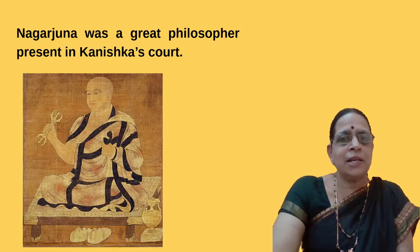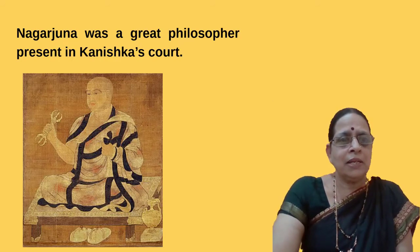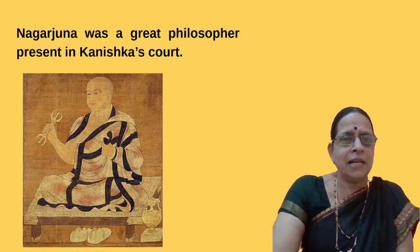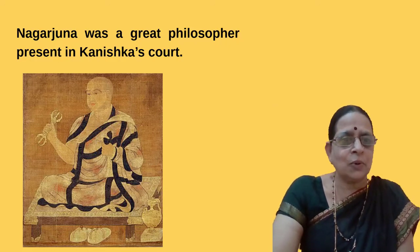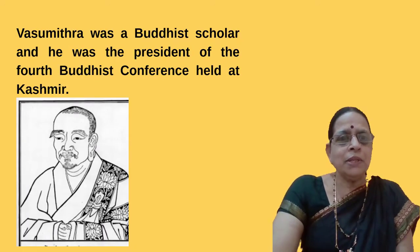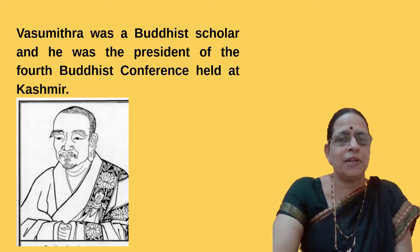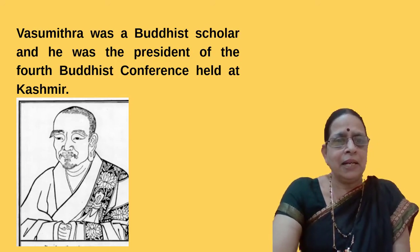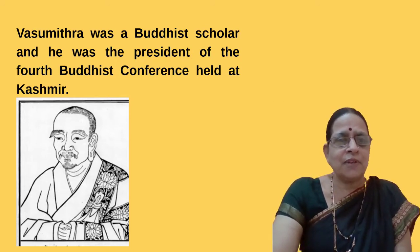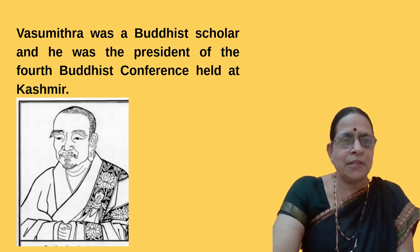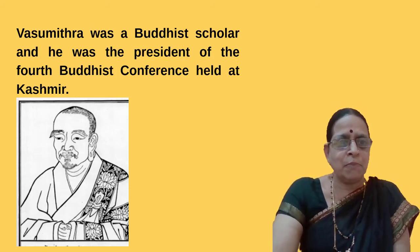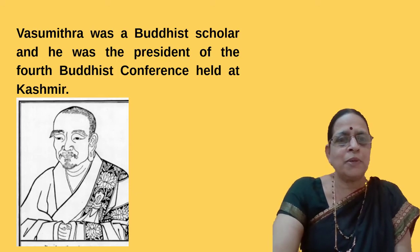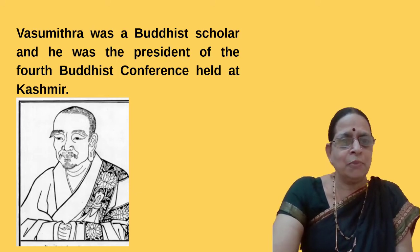Nagarjuna was a great philosopher present at Kanishka's court. Vasumitra was a Buddhist scholar and he was the president of the Fourth Buddhist Conference held at Kashmir. During that period, an international Buddhist conference was held at Kashmir, and Vasumitra presided over the function.